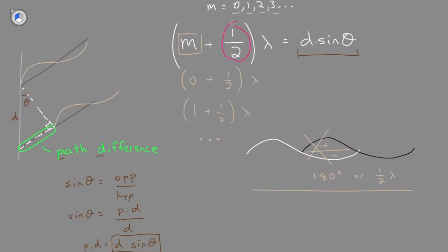And you should be able to pick up on this if we just use the equation without half, so m lambda, that would be the equation for constructive interference.